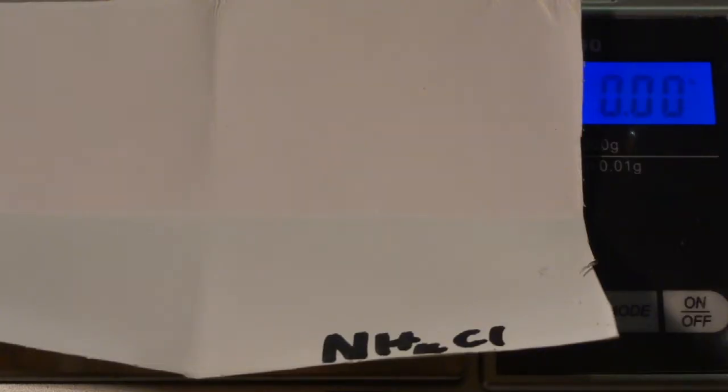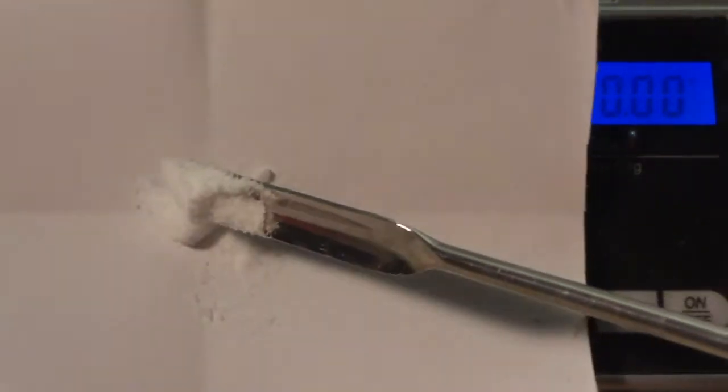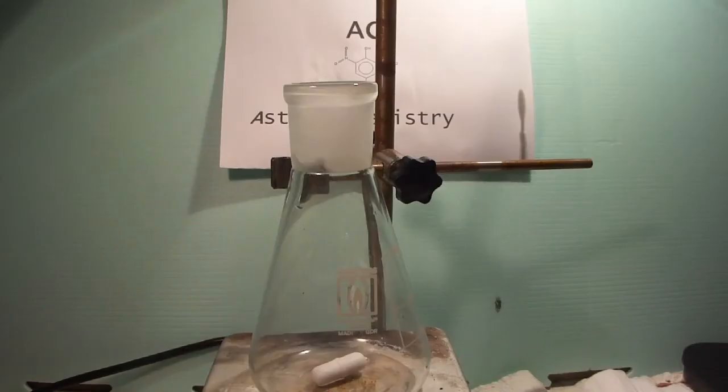Let's see how to prepare nitrogen in the lab. Start by measuring out 25 grams of fresh mouse caught in the laboratory. Ha ha, don't worry, that was a joke. Instead, start by measuring out 1.38 grams of ammonium chloride. Next, weigh out 1.78 grams of sodium nitrite.